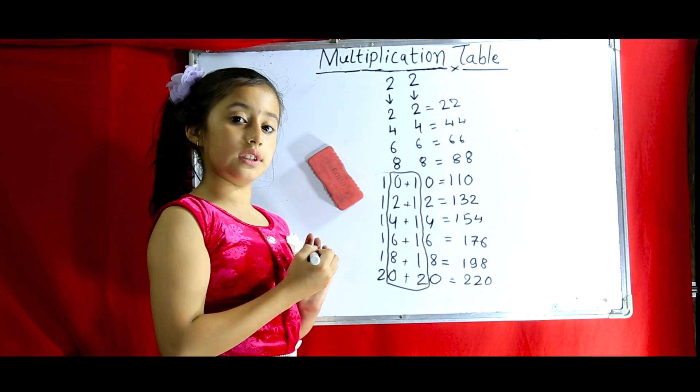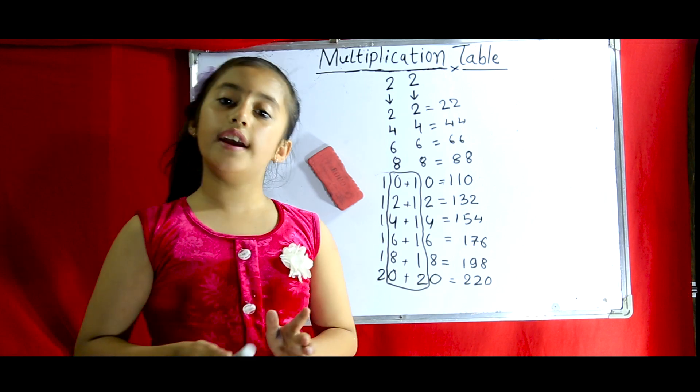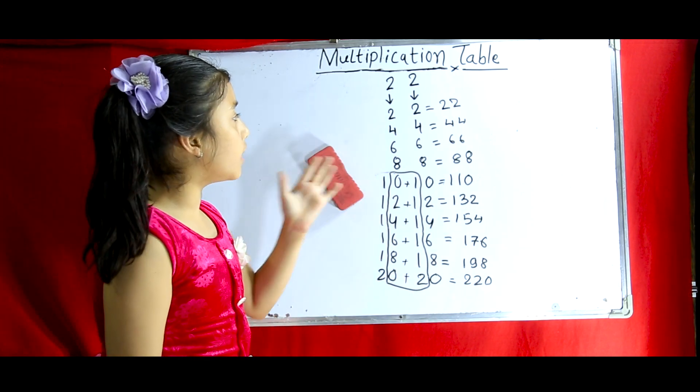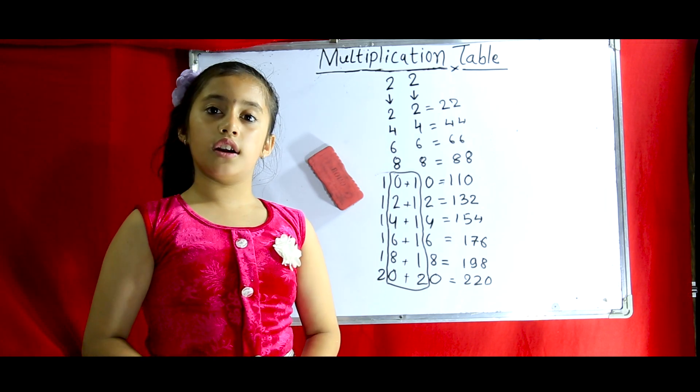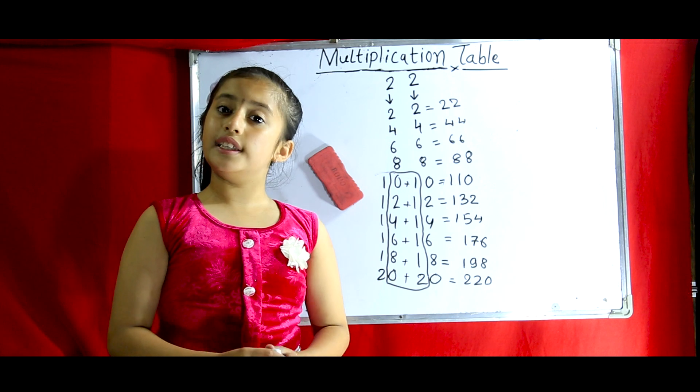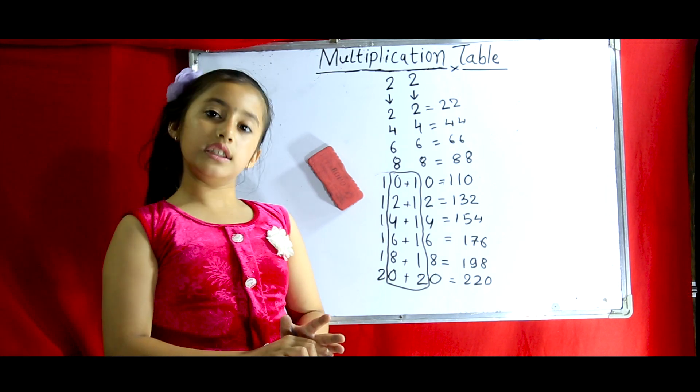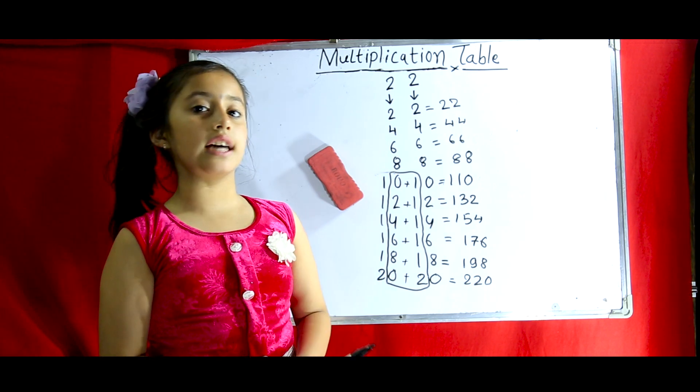So, the table of 22 is completed. I hope it is easy, quick and very, very, very much easy for you to learn the multiplication table and it is for 22 to 29, 42 to 49, 32 to 39 and till 92 to 99. Thank you.